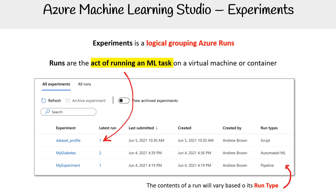Scripts could be pre-processing, auto ML, a training pipeline — but what it's not going to include is inference. Once you've deployed your model or pipeline and you make predictions via requests, it's just not going to show up under here.